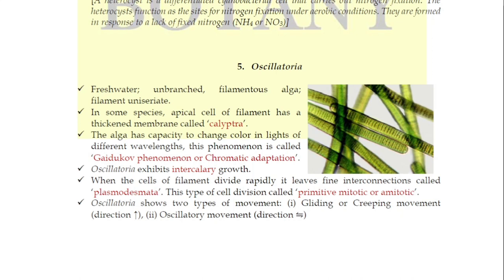Another important feature of Oscillatoria is that its cells have the capacity to change color when exposed to different wavelengths of light. This was discovered by Guidekov, so it is called the Guidekov phenomenon. It is a type of chromatic adaptation and is also referred to as chromatic adaptation.